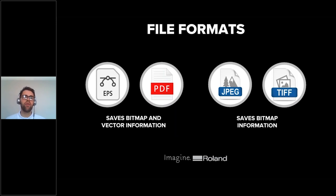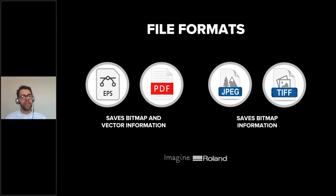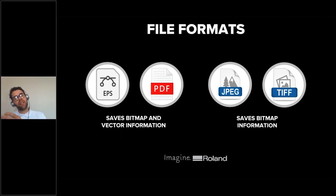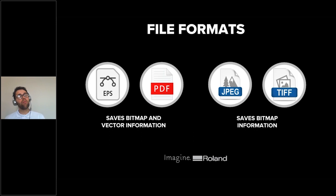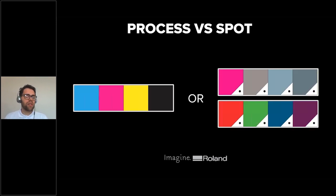The other thing that links into this is file formats. EPS and PDF are the most commonly used formats in the industry because they can save both bitmap and vector information. That's going to be the most common output from Illustrator or CorelDraw going into your RIP software. If you save into JPEG or TIFF formats — which are bitmap only — all of those cut lines you've designed in will effectively be flattened and won't get pulled through into your RIP software.